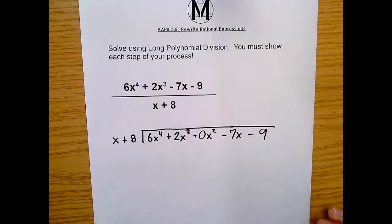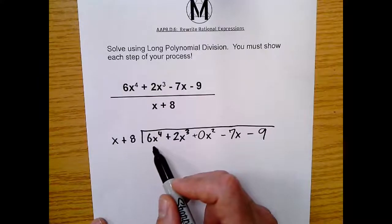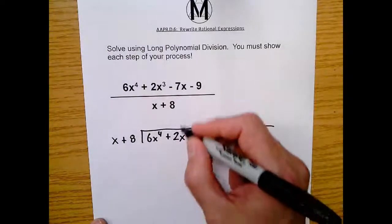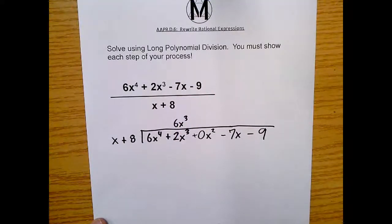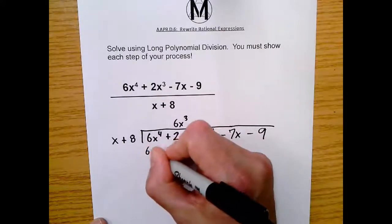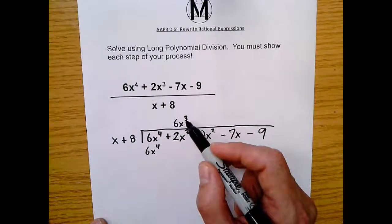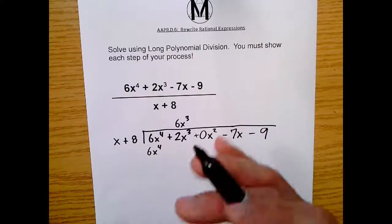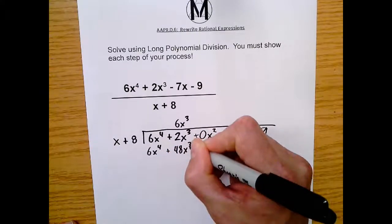So the first step, it's pretty much like a four-step process. We ask ourselves, what do I got to multiply this x by for it to become 6x to the fourth? We just multiply this x by 6x to the third. And I'm going to line up my terms by degree. So I know that this is going to be 6x to the third. That's step one. Step two is we multiply down, or distribute down. So what is 6x to the third times x? That is 6x to the fourth. You see how I'm very carefully lining up my terms by degree. And then 6x to the third times 8. That's like 48x to the third. So I write plus 48x to the third.